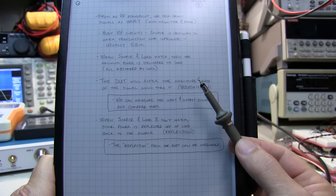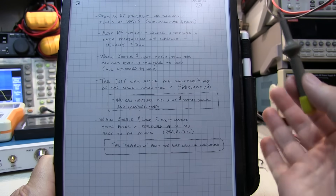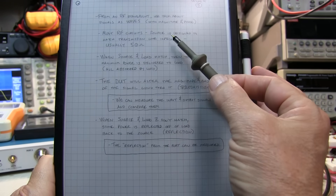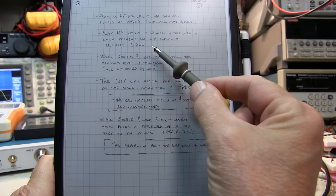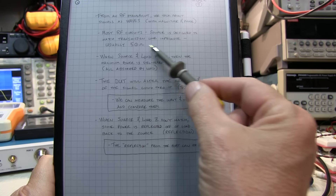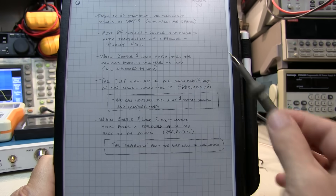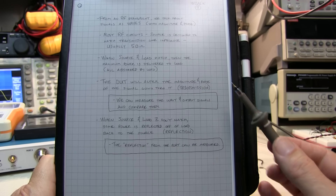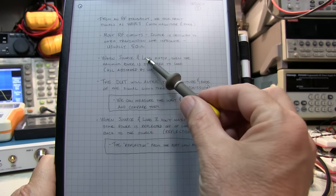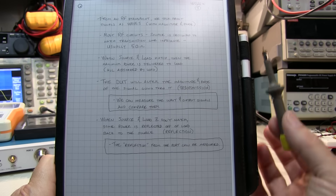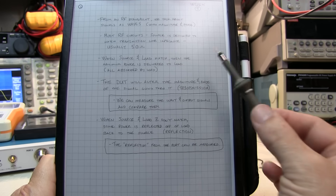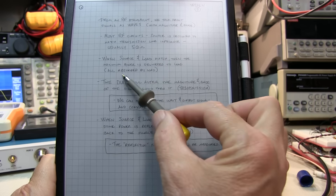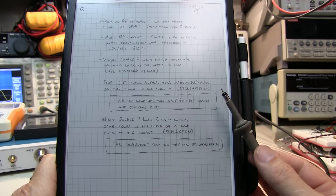In most RF circuit designs, there's typically what we call a system impedance involved, meaning there are transmission lines or interconnects between devices, and the input and output ports of the devices themselves are usually designed around this common non-reactive impedance, usually 50 ohms. When the source and load impedances match, then the maximum power is delivered to the load, meaning there's no power reflected off of that load's input, and all the power is absorbed by the load.